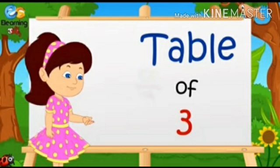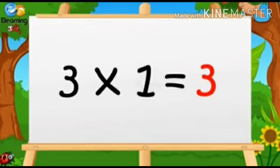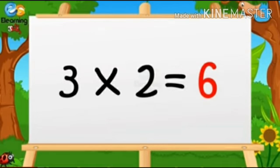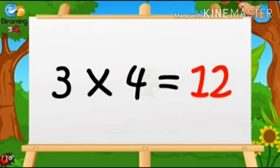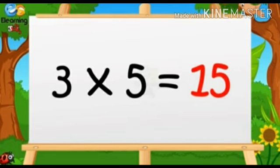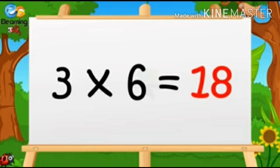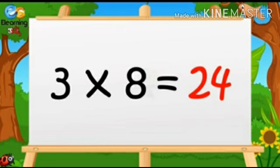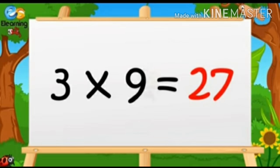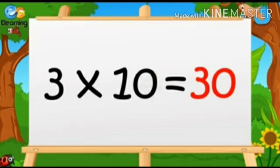Now let's learn table of 3. 3 1s are 3, 3 2s are 6, 3 3s are 9, 3 4s are 12, 3 5s are 15, 3 6s are 18, 3 7s are 21, 3 8s are 24, 3 9s are 27, 3 10s are 30.